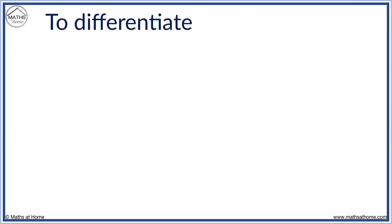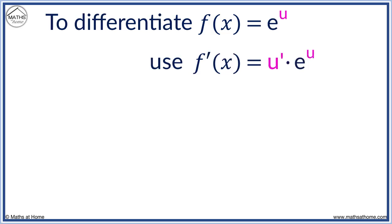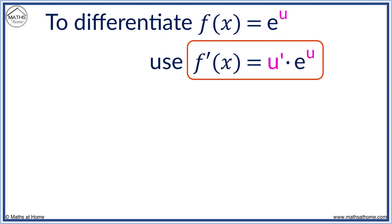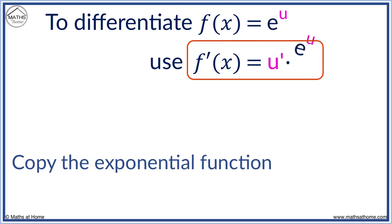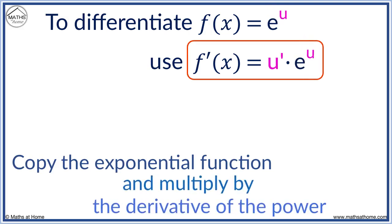To differentiate f of x equals e to the u, where u is some function, we use f dash x equals u dash times e to the u. Here, u dash means the derivative of u. This rule will allow us to differentiate any exponential function. In words, this rule means that we copy the exponential function, then we multiply by the derivative of the power of the exponential.